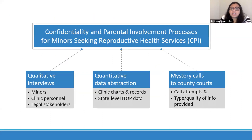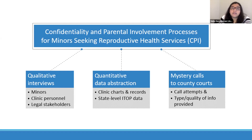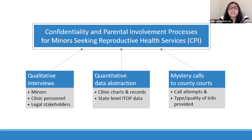This larger project — the confidentiality and parental involvement processes project, or CPI for short — involved a number of different research avenues. There were qualitative interviews with minors, clinic personnel, and legal stakeholders. We did quantitative data abstraction, physically going to abortion clinics in major cities in those states, looking at clinic charts and records, and also taking state-level ITOP data — reporting data that all clinics are required to report. And finally, we did a really unique mystery call study to county courts. Peyton, Sana, and Jayee will all describe that in detail.